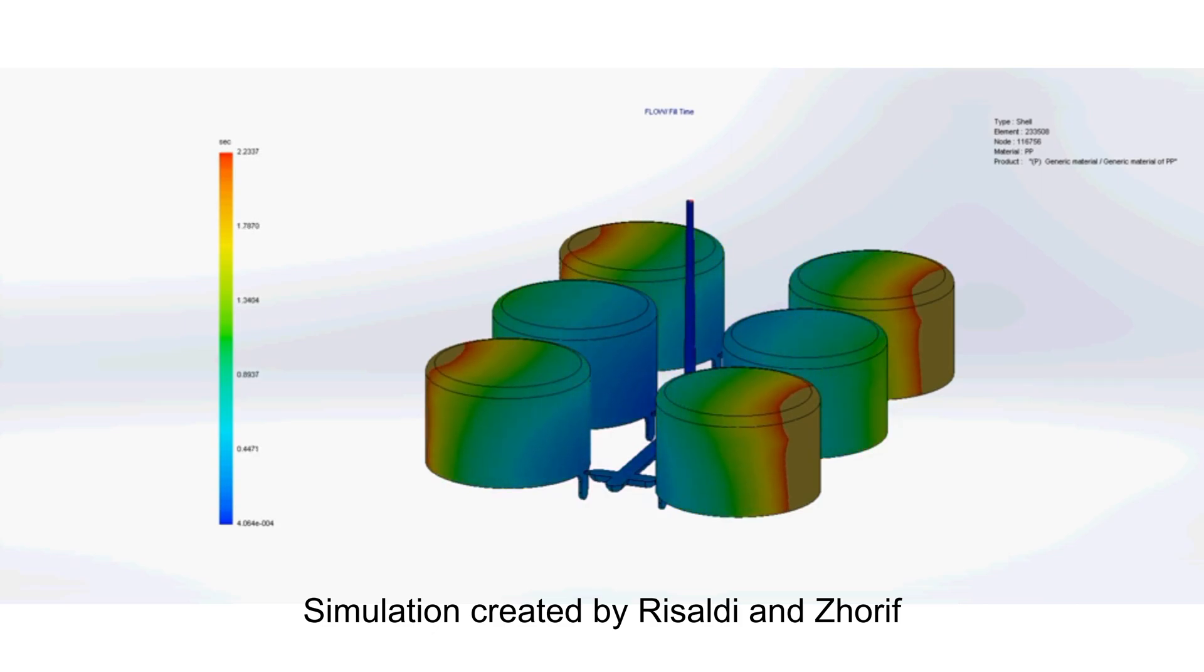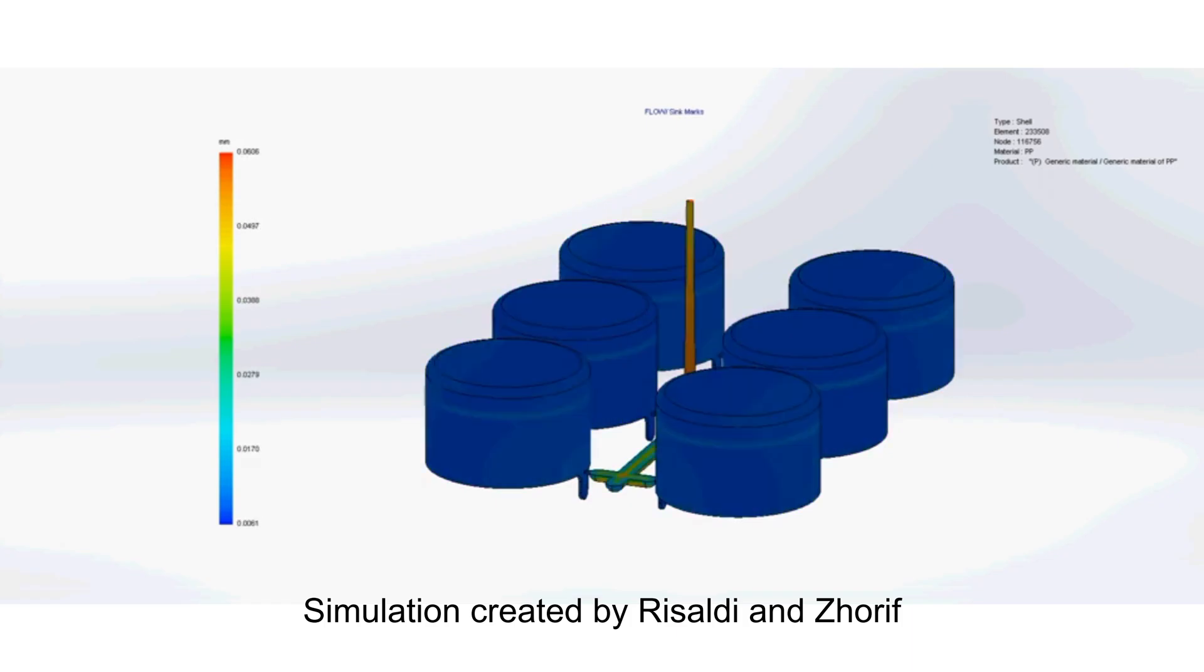The solution for this is to reduce the cross-section of the gate in the two middle cavities, or enlarge the cross-section of the gate in the four outer cavities.